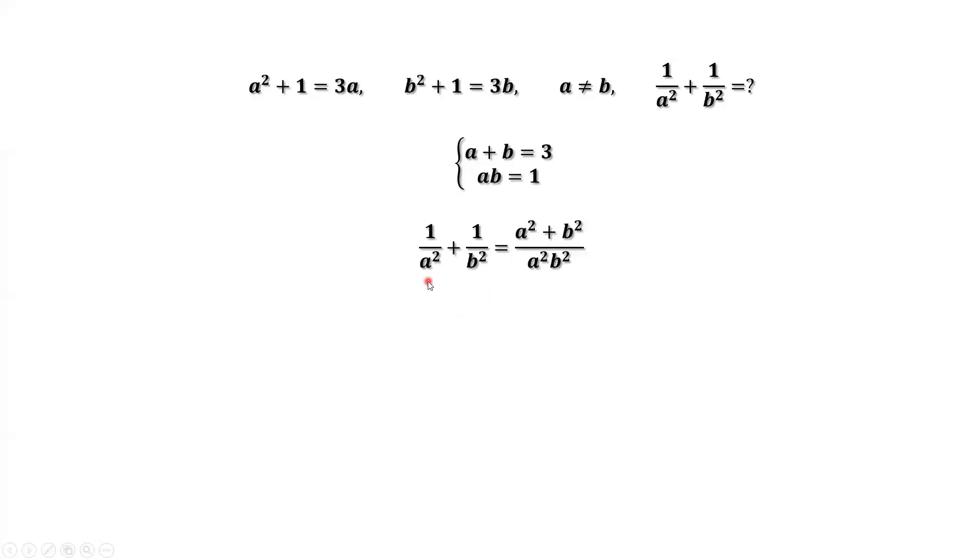This is the question. We consider the common denominator, which is a squared times b squared. The numerator should be a squared plus b squared.